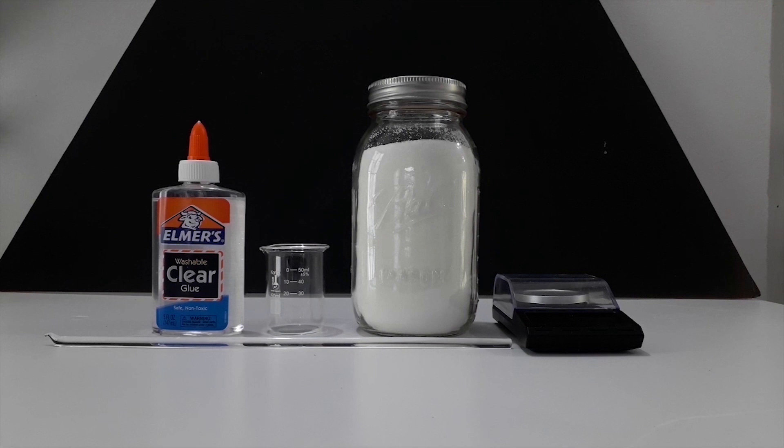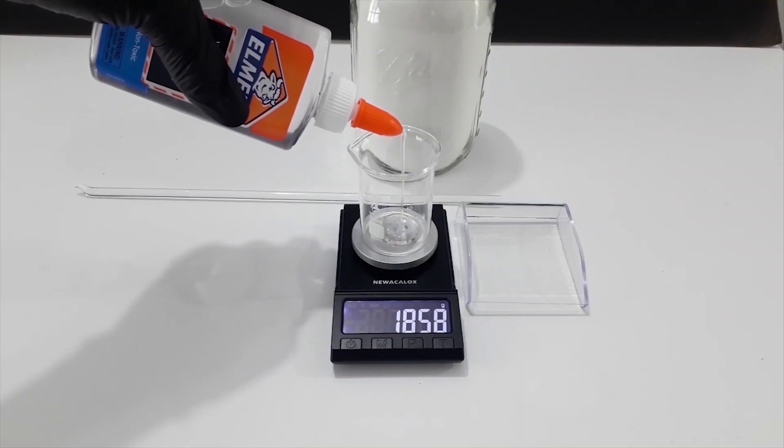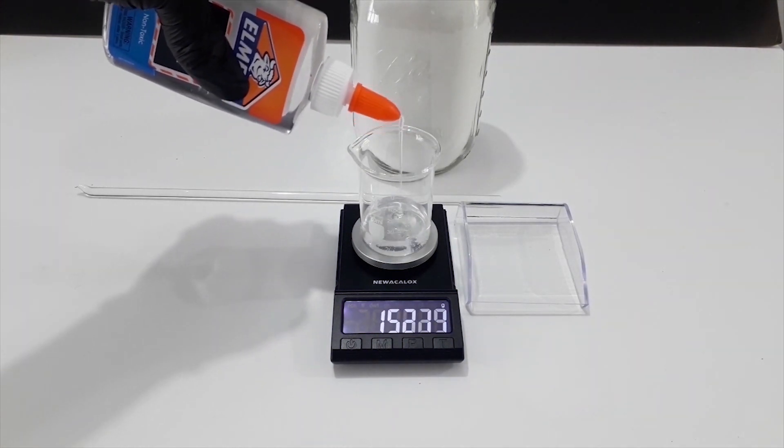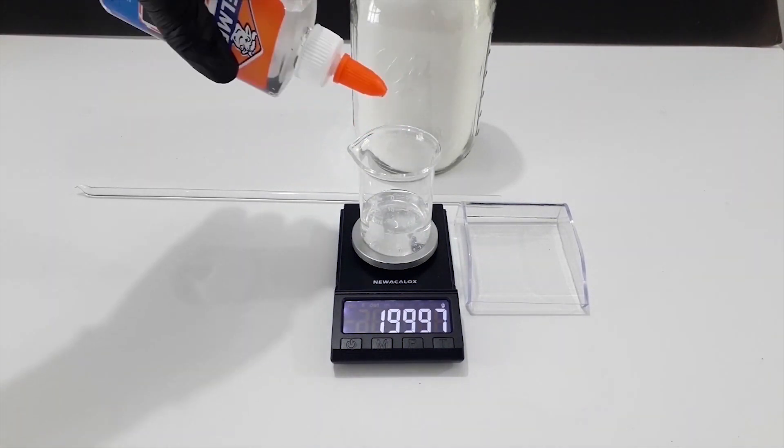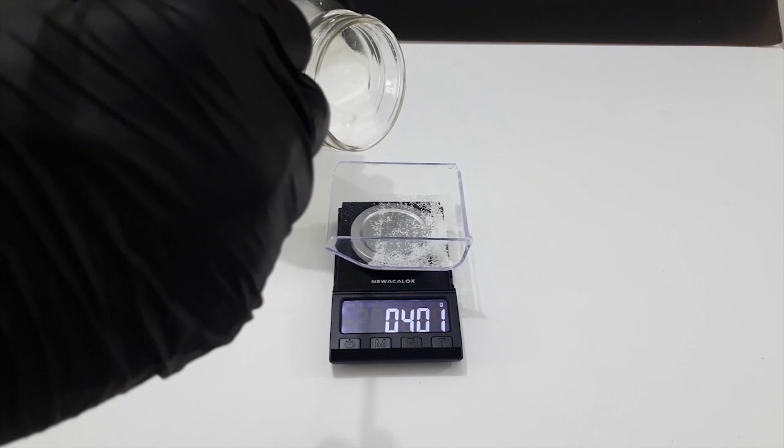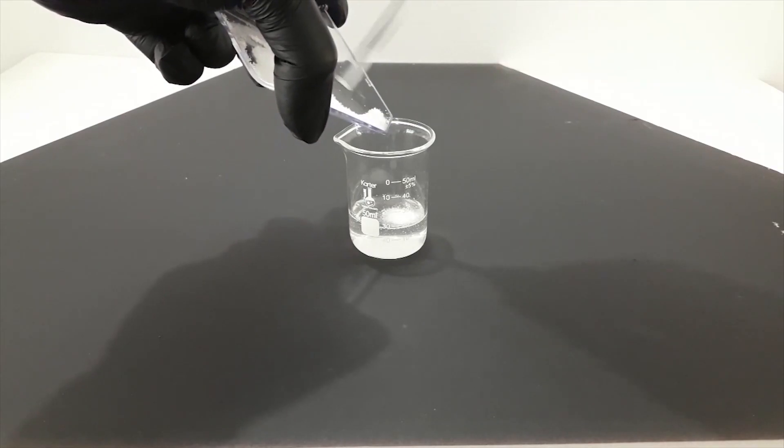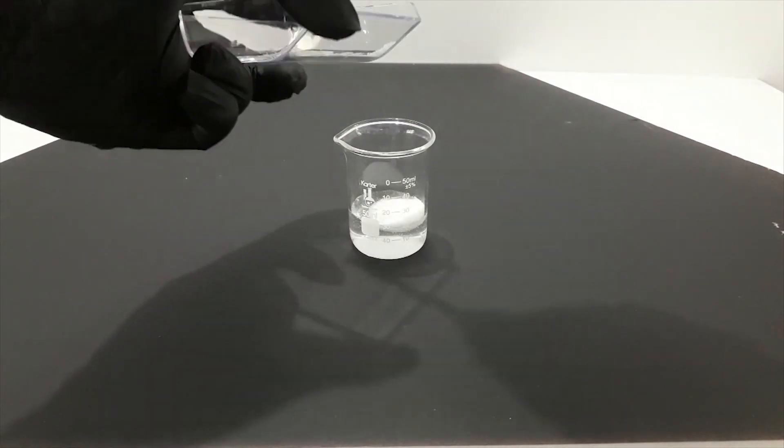Now we will create the ion exchange resin layer. To do this, all we need is clear PVA glue, citric acid, a scale, and something to stir it with. White glue will not work for this purpose as it doesn't contain polyvinyl alcohol but instead polyvinyl acetate which is non-reactive. The ratio of PVA glue to citric acid is 4 to 1. I'm using 20 grams of PVA glue followed by 5 grams of citric acid. All of the citric acid is then added to the glue and stirred until it is fully dissolved.